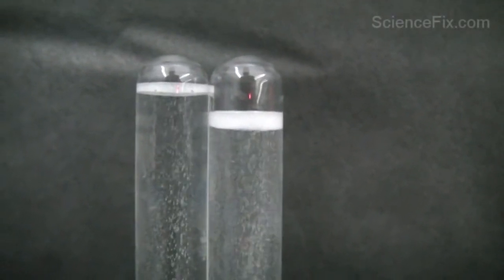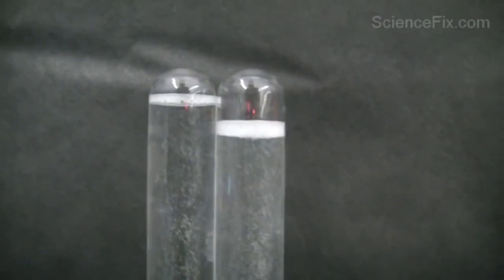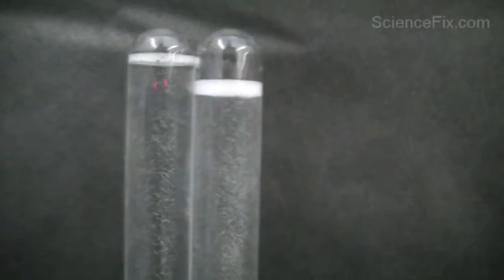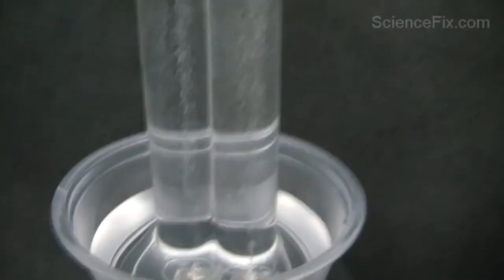you have twice as much hydrogen gas as oxygen gas. This is how experimenters first learned that the ratio of hydrogen atoms to oxygen atoms in water is two to one - a two to one ratio, thus H2O.